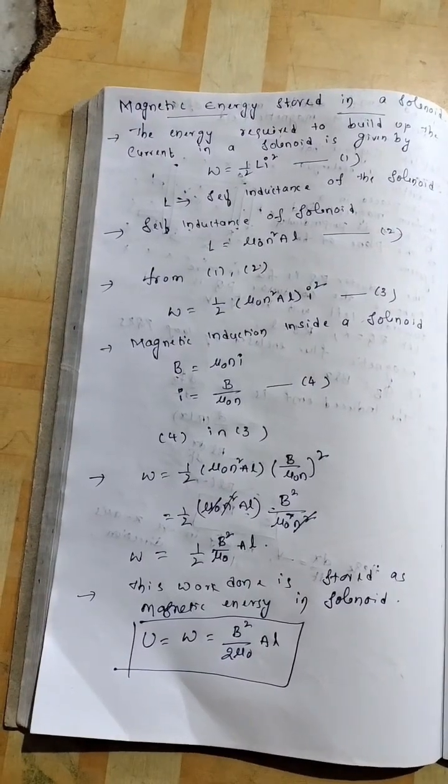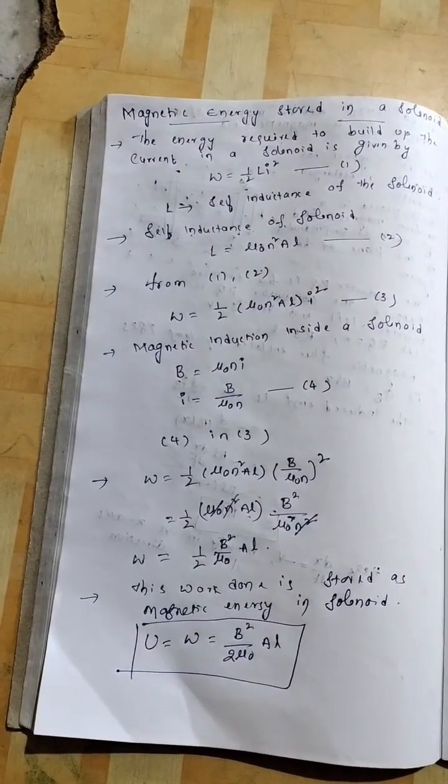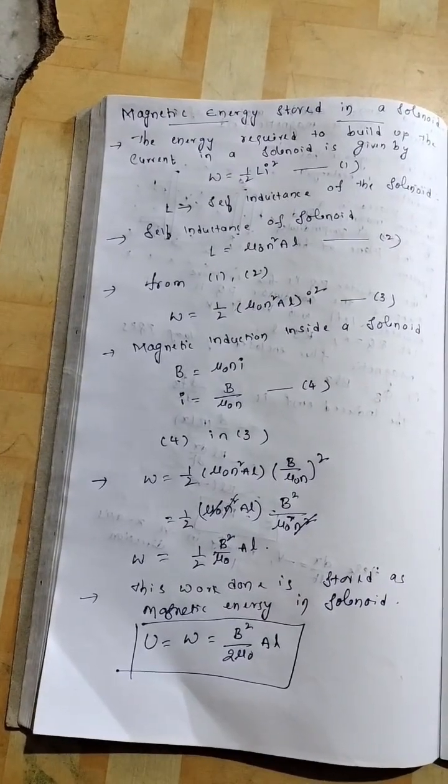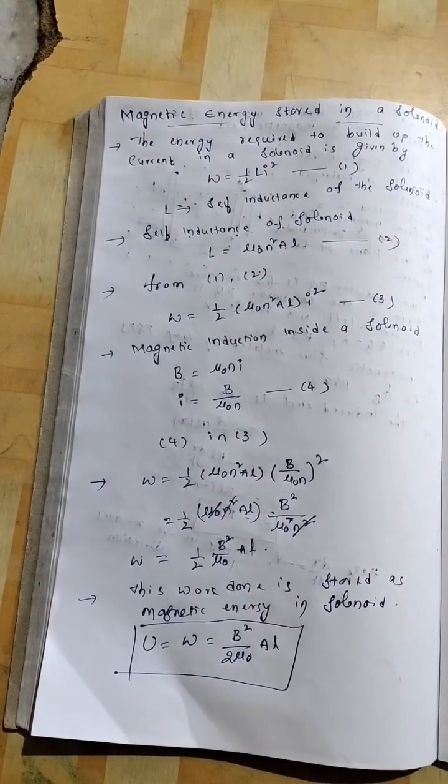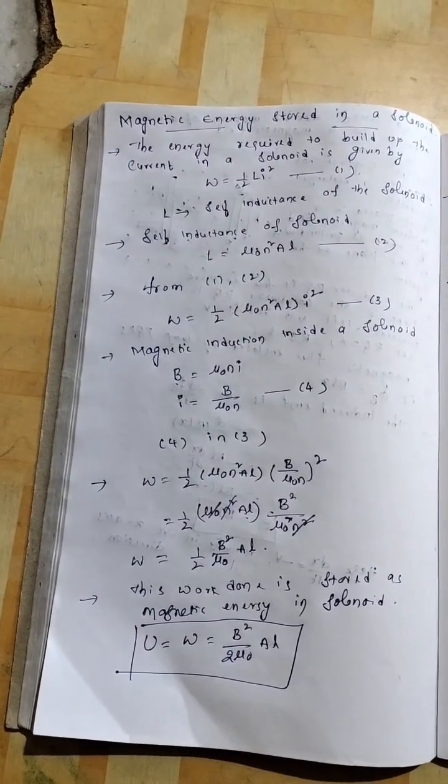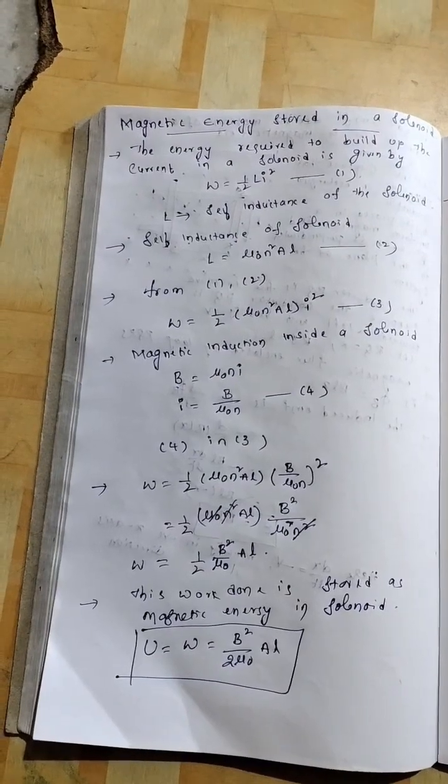For this we will consider a solenoid. The energy required to build up the current in solenoid is nothing but equivalent to work done and that work done formula is half l i square where l is the self-inductance of solenoid.